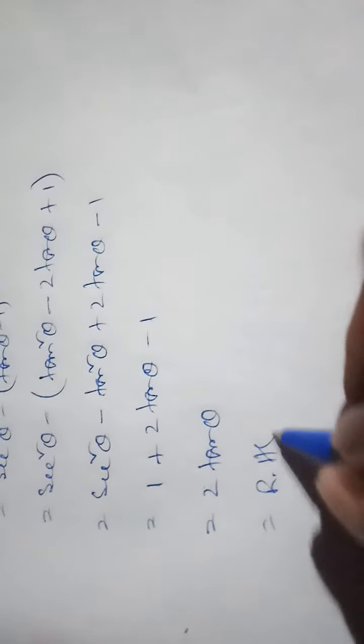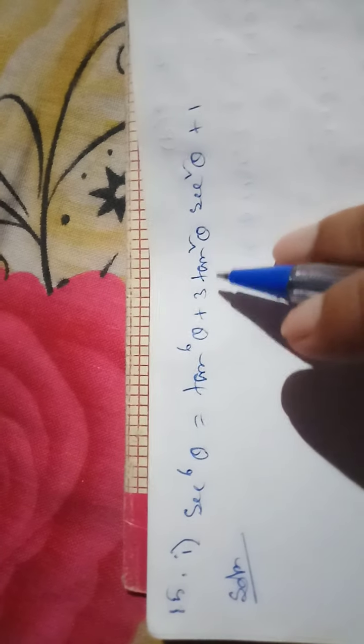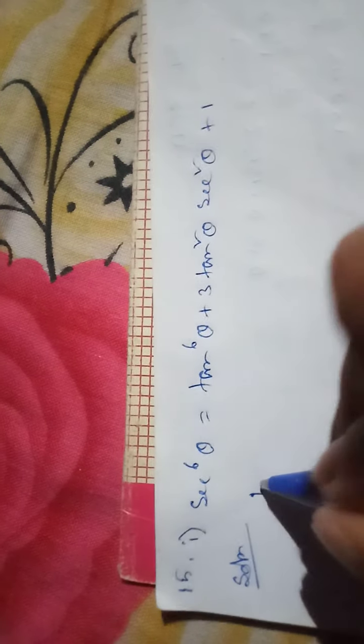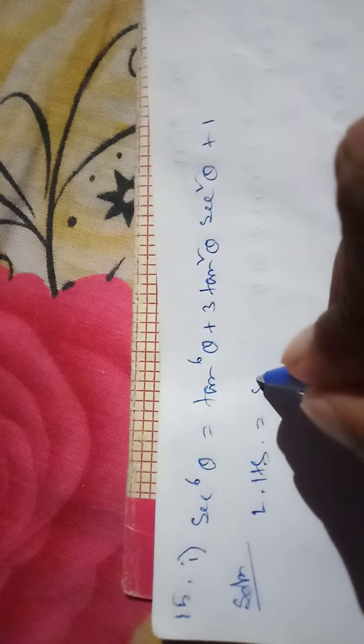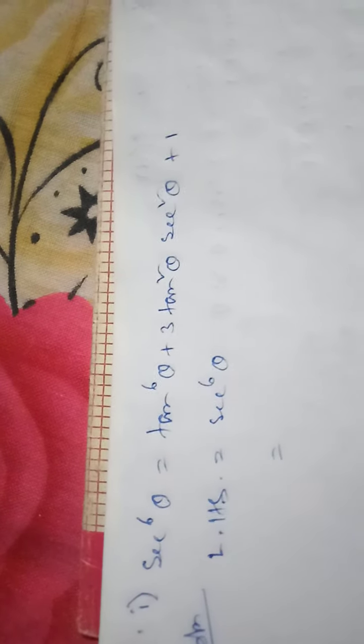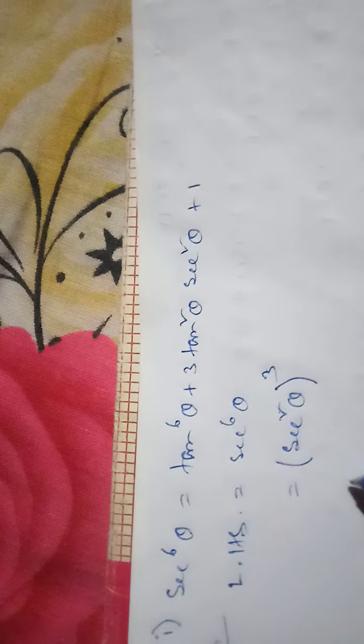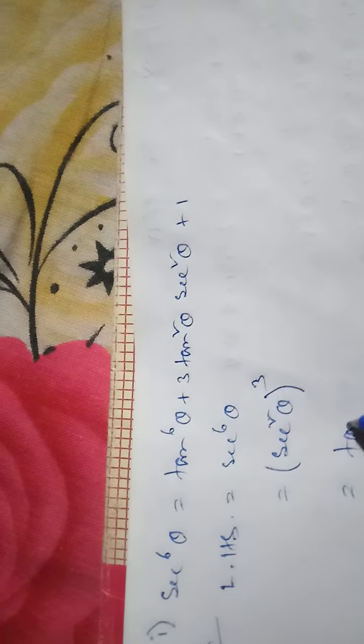One more: Question 15 — sec⁶θ = tan⁶θ + 3tan²θ·sec²θ + 1. Start from the left-hand side: sec⁶θ. Since the power is 6 and there is no direct identity, we write it as (sec²θ)³, because 2 × 3 = 6. Now sec²θ = tan²θ + 1.